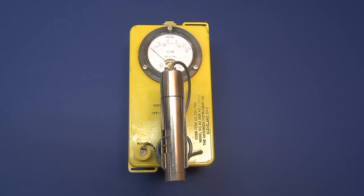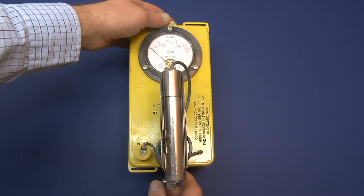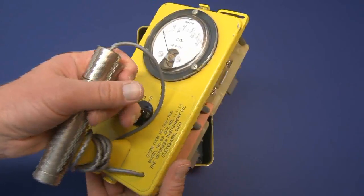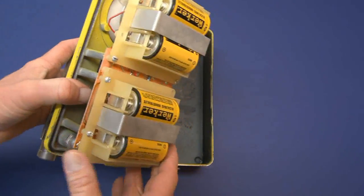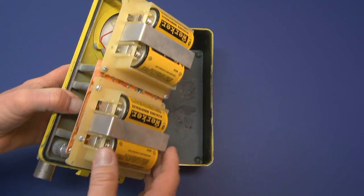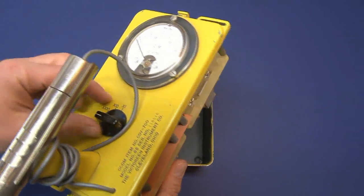The instrument operates on four D-cell batteries, and I'll open this instrument up. We can take a look and see inside the instrument there's a place for the four batteries, and you want to make sure this instrument's turned off.